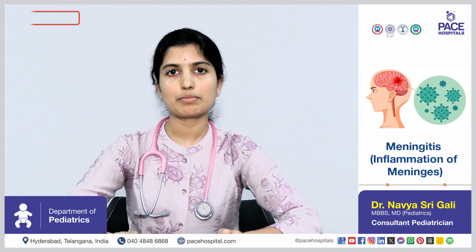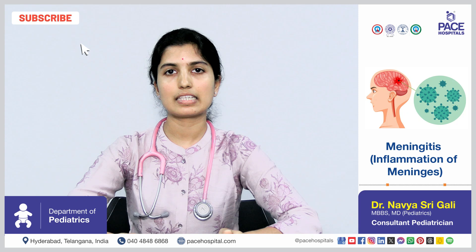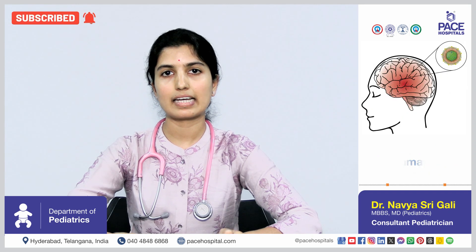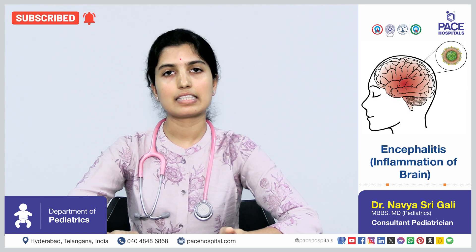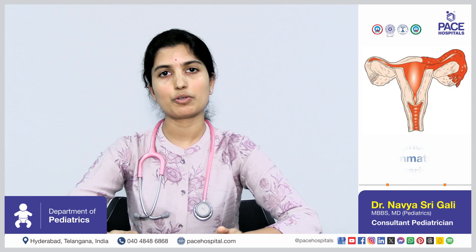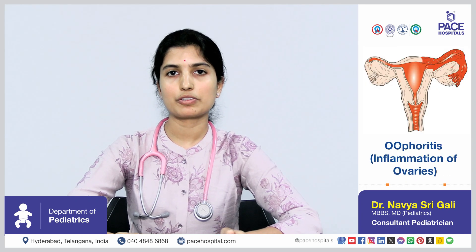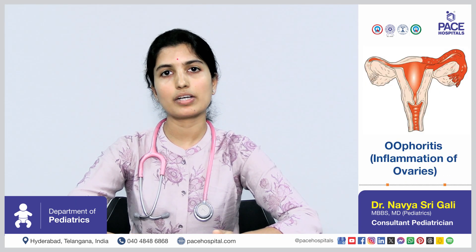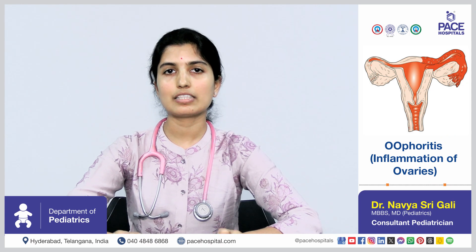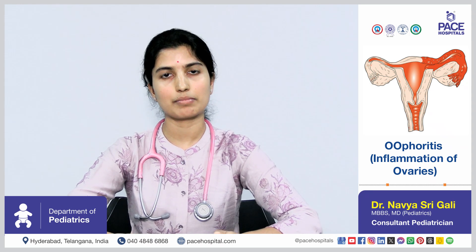The complications seen in mumps are meningitis, that is inflammation of the meninges; encephalitis, that is inflammation of the brain; and orchitis and oophoritis, that is inflammation of the testes in boys and inflammation of the ovaries in girls. These complications are very rarely seen in mumps.